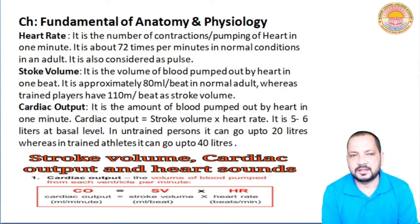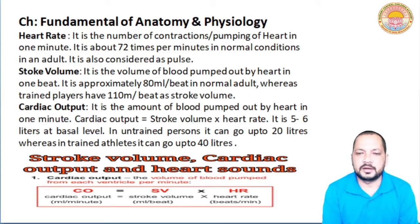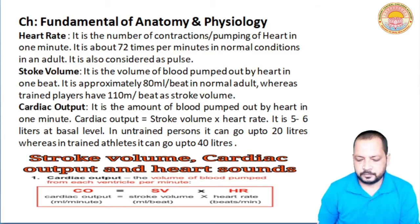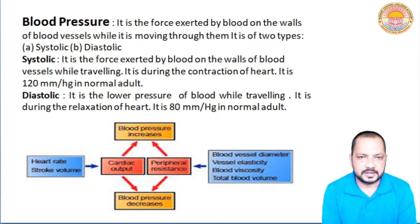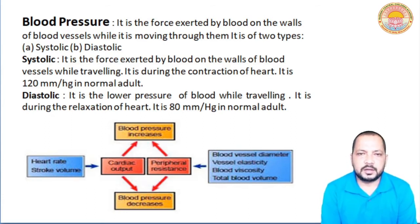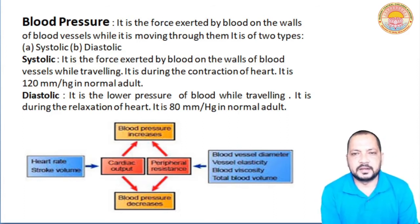In trained athletes cardiac output can be around 40 litres at rest, and in activity it can be enhanced further. Now another important topic is blood pressure. Blood pressure — you can see a picture here. The definition of blood pressure is: it is the force exerted by blood on the wall of blood vessels while it is moving through them.